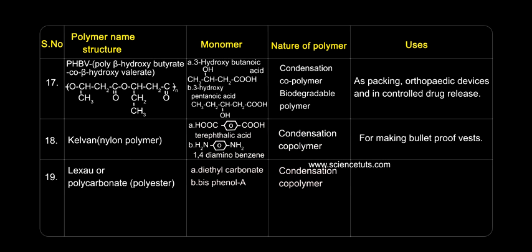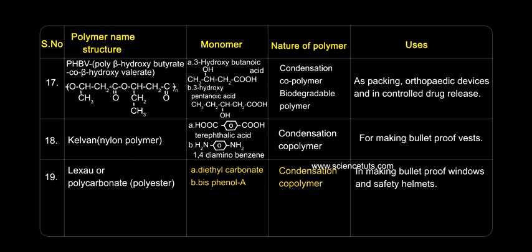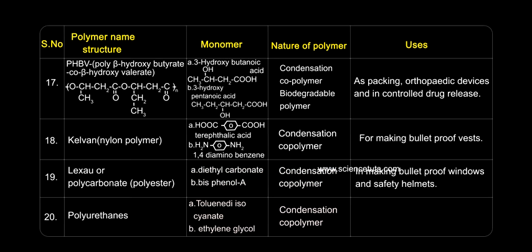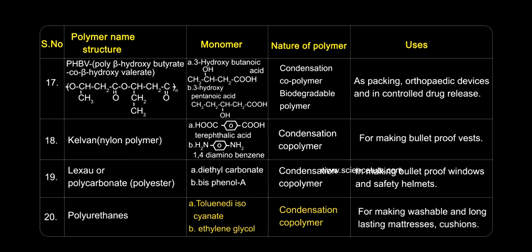Lexan (or polycarbonate): used in making bulletproof windows and safety helmets. Polyurethane: used for making washable and long-lasting mattresses and cushions.